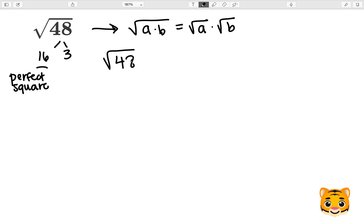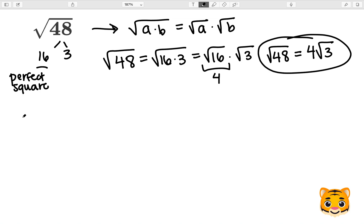Now we can rewrite the square root of 48 as the square root of 16 times 3, which we can then use our math rule to rewrite as the square root of 16 times the square root of 3. The square root of 16 is equal to 4 because 4 times 4 equals 16. Therefore, we can rewrite the square root of 48 as 4 times the square root of 3, and this is our simplified version.